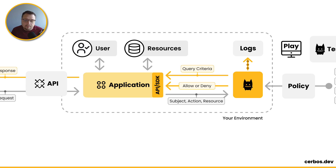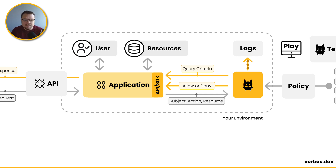So that request has come in with subject, action, resource. SERBOS will then evaluate those policies and come up with a decision. It will create an audit log of that decision — at this time, this subject tried to do this action on this resource, and it was allowed or denied by this particular policy. And that audit log would get outputted, and your logging infrastructure can pick that up for further analysis.